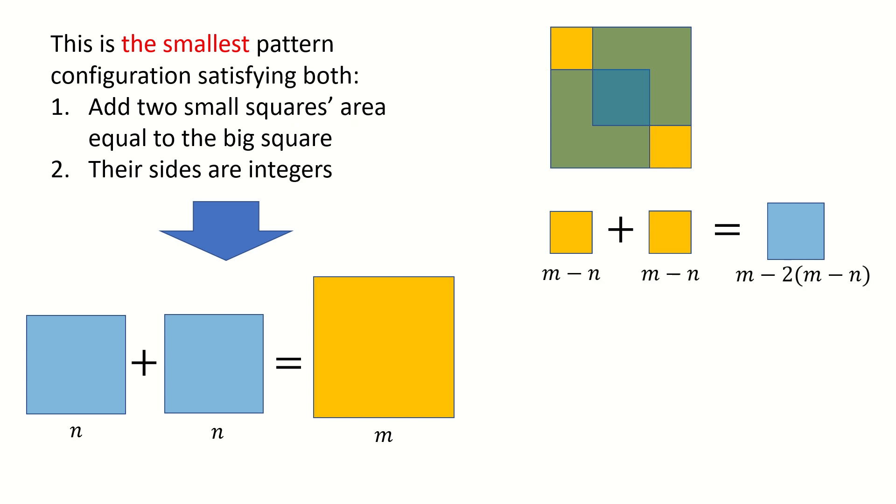Using geometry, we can compute the length for those sides of the squares, and we simplify it. And note that their sizes are integers. So can you see the contradiction here?